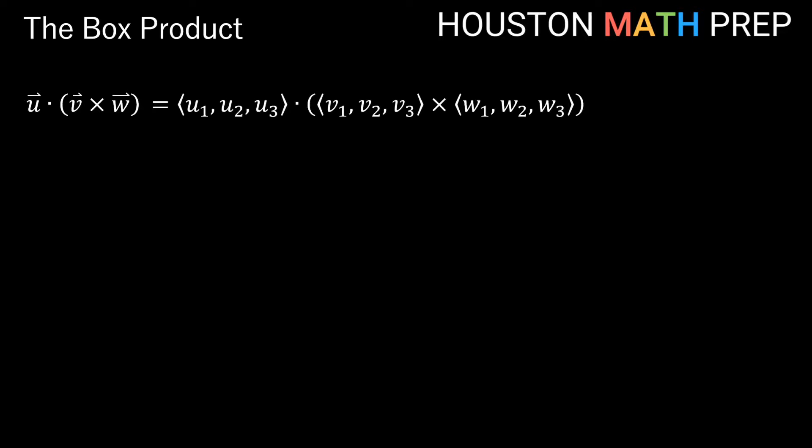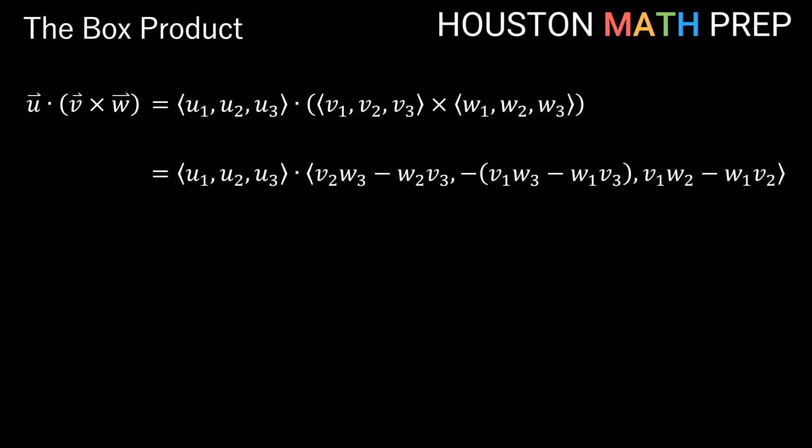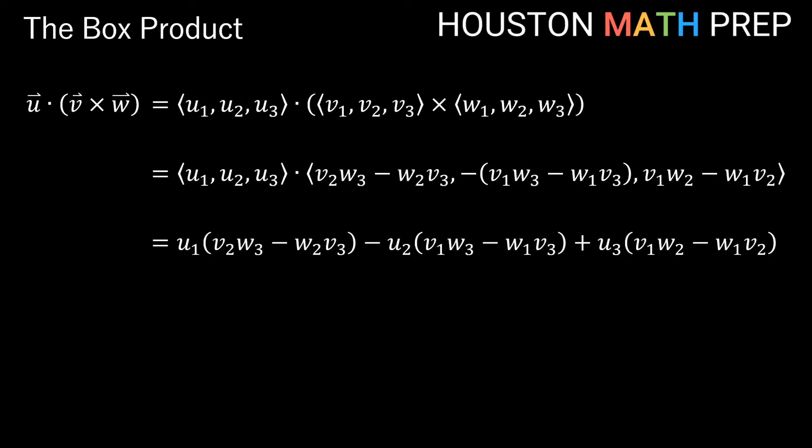If we write out our vectors in terms of their components — u1, u2, u3 dot v cross w — computing the cross product first gives you this somewhat lengthy formula for v cross w. Then taking the dot product with u, each of those components from the cross product would be multiplied by components from u, and then we'd add them all together. If you're familiar with the cross product, you might be getting deja math right now — because this turns out to be just the formula for a cross product, but with the components of u in place of i-hat, j-hat, and k-hat.